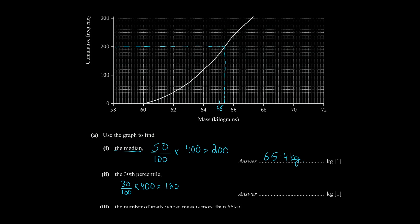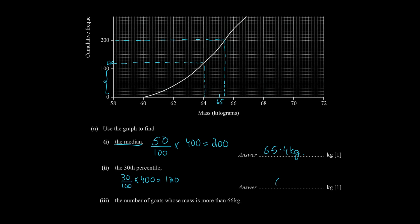We have to see that the corresponding value of our cumulative frequency of 120 will be our answer. Since we have 10 small boxes representing 100 units, if we divide 100 by 10, every box is responsible for 10 units. So 120 will be 2 boxes above 100. The corresponding value of 120 is 64. So our 30th percentile is 64 kilograms.